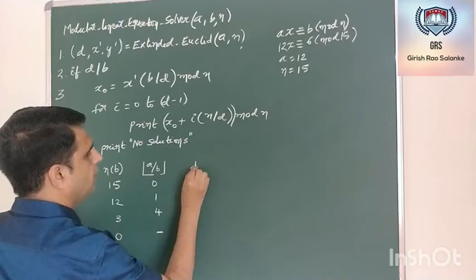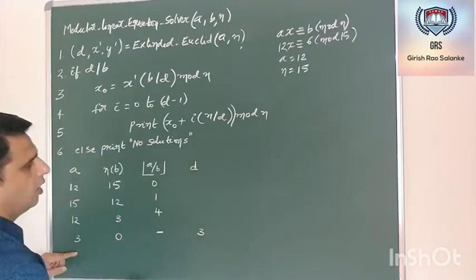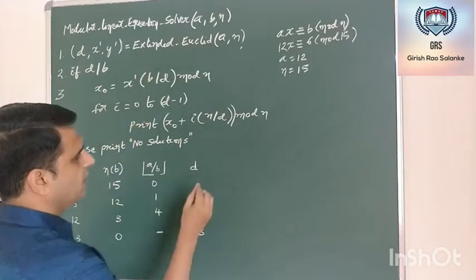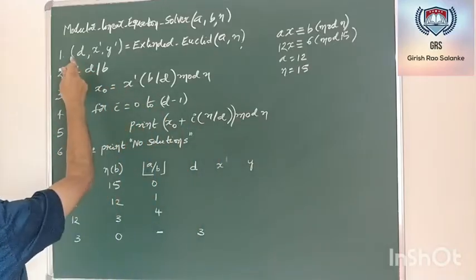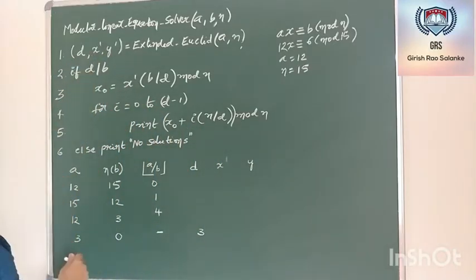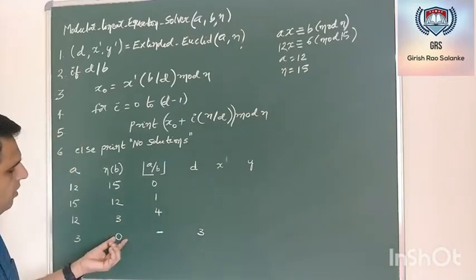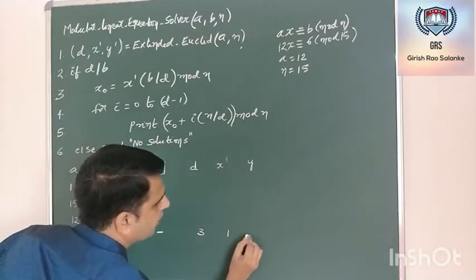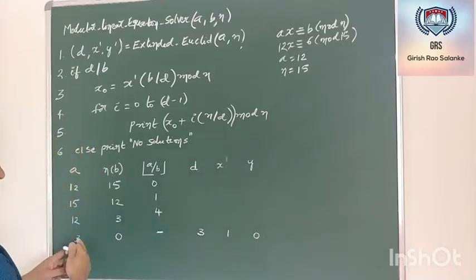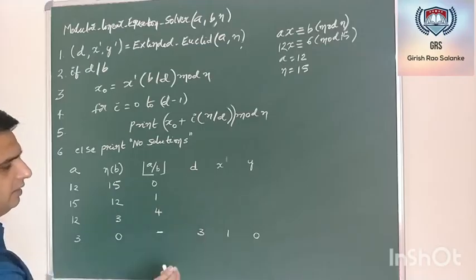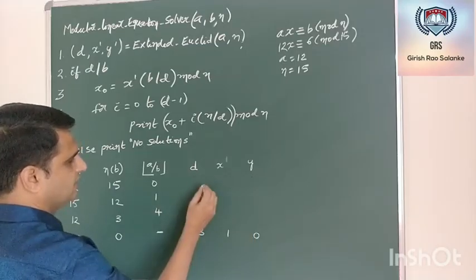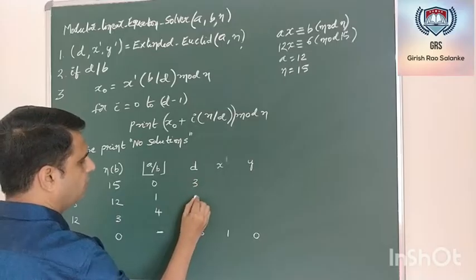What is the value of d? d value is 3. In the extended Euclid's algorithm we calculated the values of x and y. I used to call them x dash and y dash. The algorithm ends whenever b equals 0. The initial x and y values will be 1 and 0, because 3 into 1 plus 0 into 0 is 3. Now I need to find the other values of x and y such that all d values equal 3.